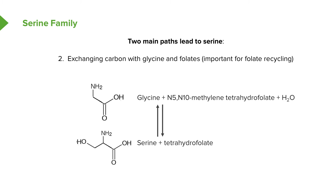In this reaction, a CH2OH group from methylene-tetrahydrofolate is transferred onto glycine to make serine. The product of that transfer is tetrahydrofolate. This reaction can also go in the reverse direction, where serine serves as a precursor to make glycine, illustrating how different folates are interchanged. The CH2OH group added to serine is shown in the green box.